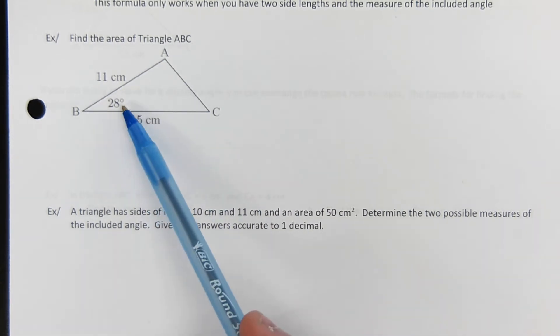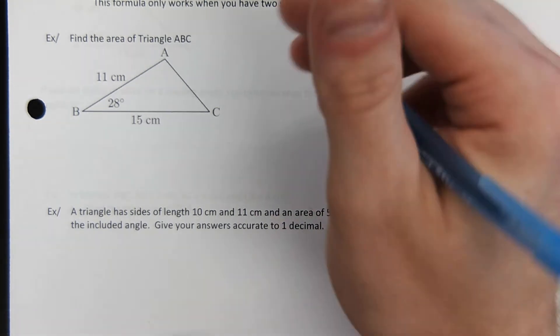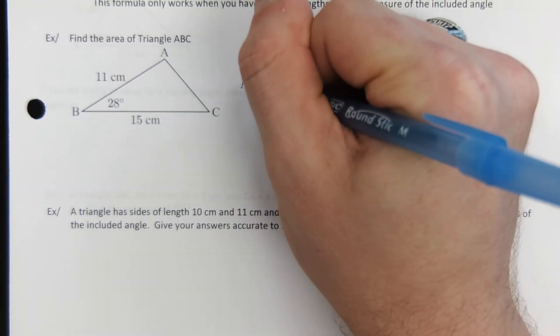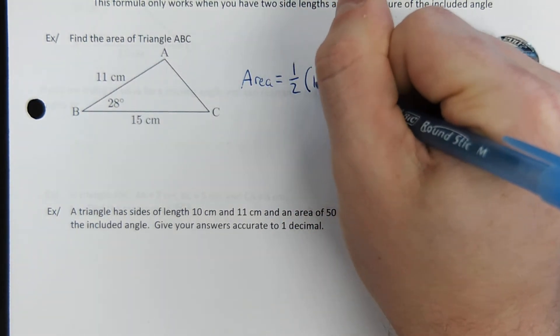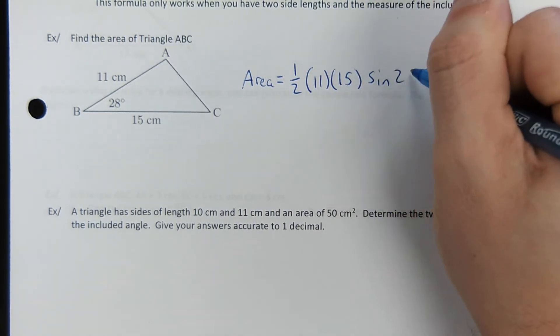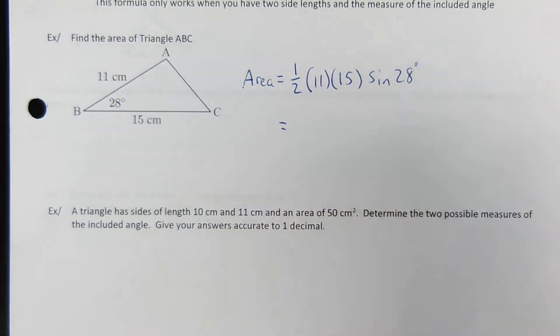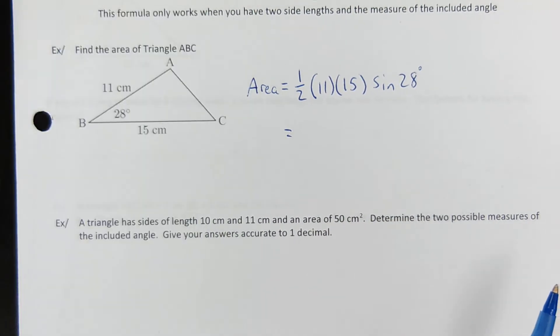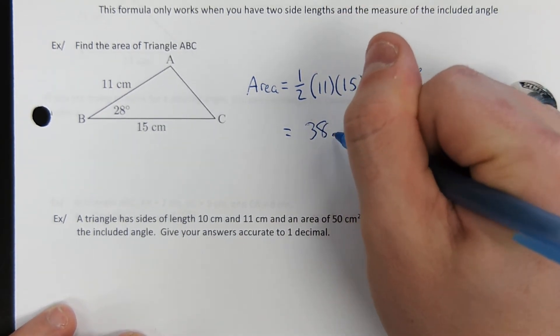This one needs to be in degrees. So the area of this triangle, one half, one of the sides, another side, times the sine of the angle. Now, of course, if the angle is given to you in radians, then your calculator needs to be in radian mode. But this one was given to us in degrees. And I'm not even going to pretend to know what that number is.